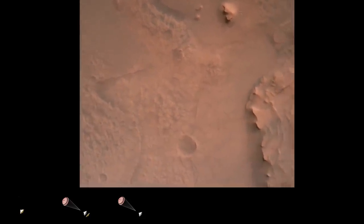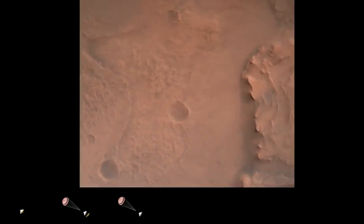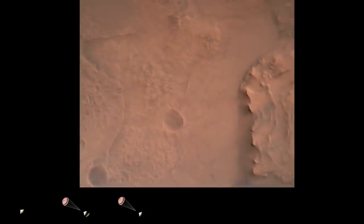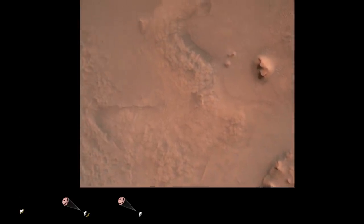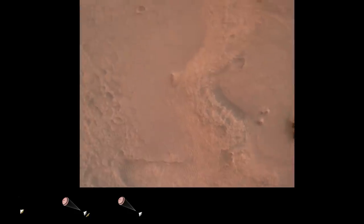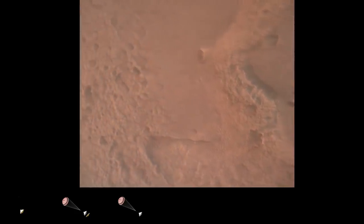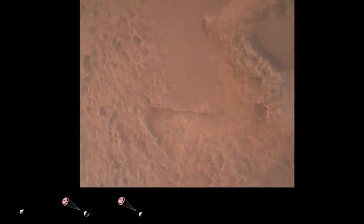Perseverance is continuing to descend on the parachute. We are coming upon the initialization of terrain relative navigation and subsequently the priming of the landing engines. Our current velocity is about 90 meters per second at an altitude of 4.2 kilometers.